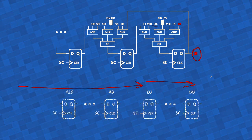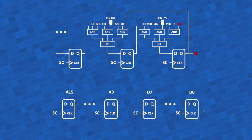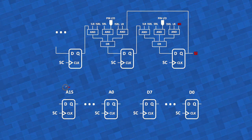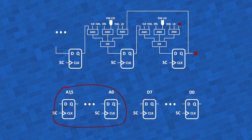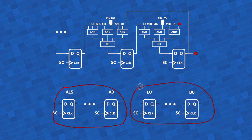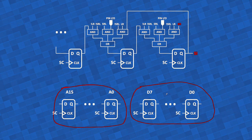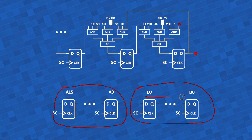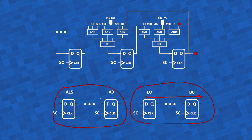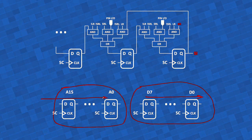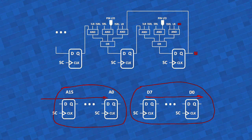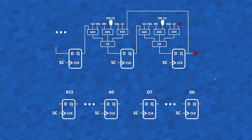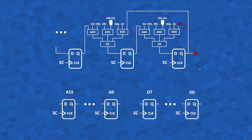We will have 24 of these flip-flops in the shift register. The 16 most significant ones carry the 16 address bits A15 to A0, then the 8 data bits D7 to D0. The data bits are placed first in the chain so that when you want to read the data bus, you only need to shift right eight times — you don't need to read all 24 bits.